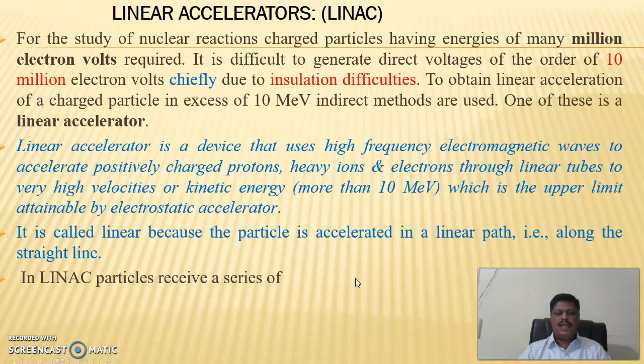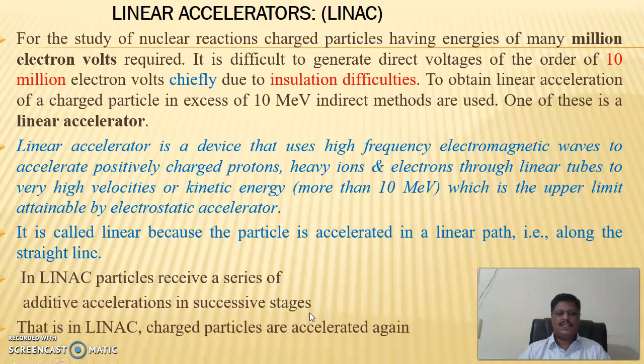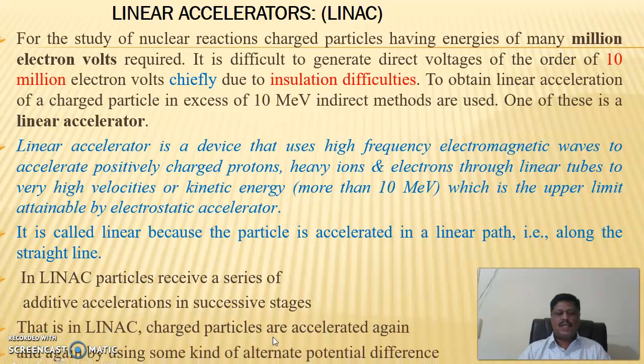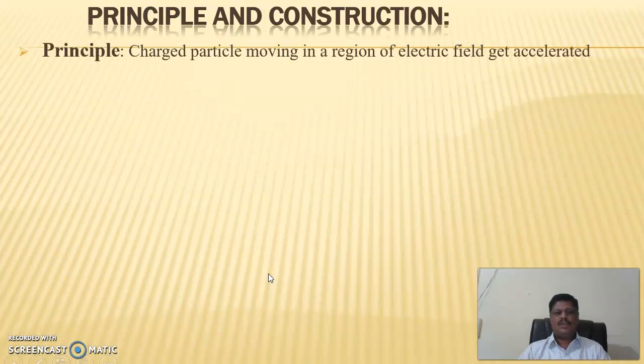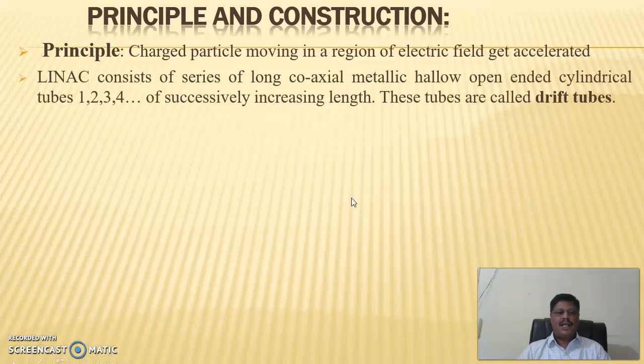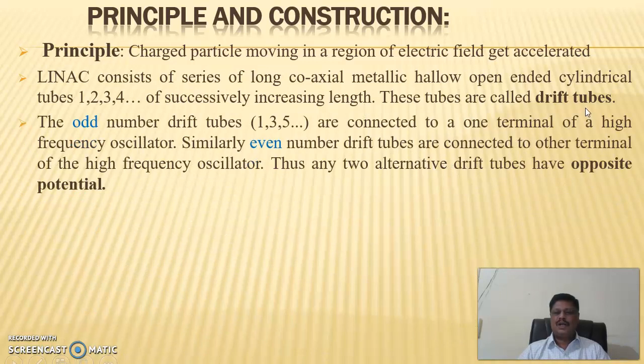In LINAC, particles receive a series of additive accelerations in successive stages. That is, in Linear Accelerator, charged particles are accelerated again and again by using some kind of alternate potential difference. The principle of Linear Accelerator is that whenever a charged particle moves in a region of electric potential or electric field, or when potential difference is applied, it gets accelerated. LINAC consists of a series of long, coaxial, metallic, hollow, open-ended cylindrical tubes 1, 2, 3, 4 of successively increasing length. These tubes are called drift tubes. The odd number drift tubes, 1, 3, 5, are connected to one terminal of a high-frequency oscillator. Similarly, even number drift tubes are connected to the other terminal of the high-frequency oscillator. Thus, any two alternate drift tubes have opposite potential.